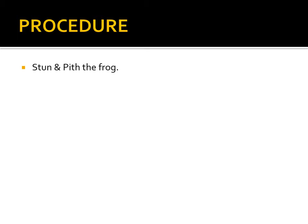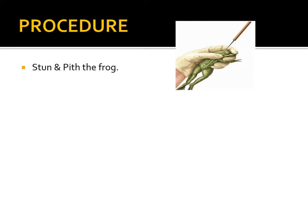Now let's see the procedure. First, there is stunning and pithing of the frog. Stunning means making the frog unconscious — we hold the frog, hit a blow on its head, and make it unconscious. Then we use a pithing needle. With the pithing needle, we insert it through the skin, muscle, and bone tissue and damage the brain and spinal cord. This is pithing of the frog.